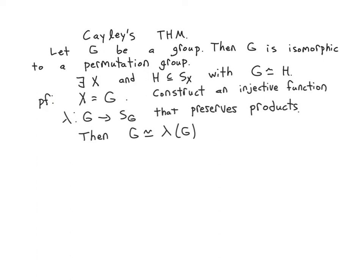So the strategy is going to be to define a certain injective function from your original group to this symmetric group that preserves products. Why? Because if it's injective, then if I replace this codomain with the image, I now get some, I can replace lambda with a surjective function. And then I can say G is isomorphic to the image of G under this function. And that's what we're going to do.